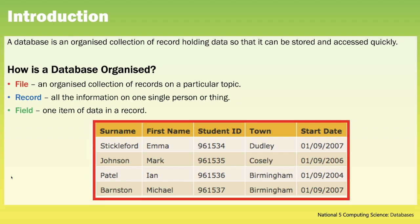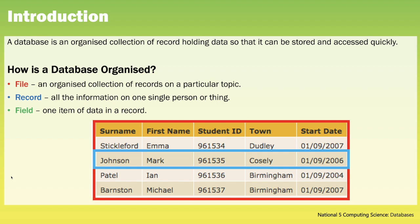The example on screen is an organised collection of information about students. Within our file we will have records, and a record is all the information on one single person or thing. So in this case our record is all the information about a student. Then we move on to fields — fields is one specific item of data in a record.